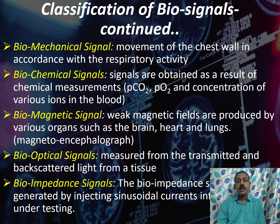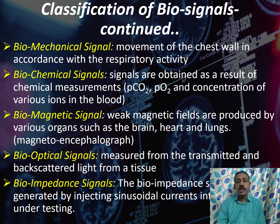Next is biochemical signals. Some signals are obtained as a result of some chemical reactions or chemical measurements such as partial pressure of carbon dioxide, partial pressure of oxygen, and concentration of various ions in the blood. Next is bio-magnetic signals. Some weak magnetic fields are produced from some organs such as brain, heart and lungs. These magnetic signals are only measured using a magnetoencephalograph.